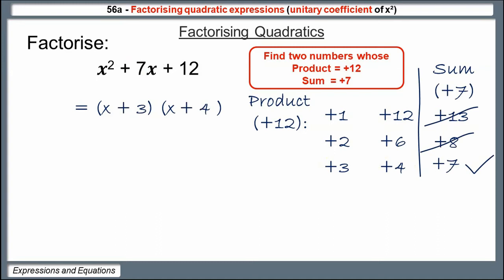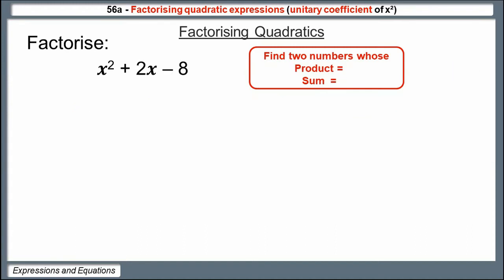When everything's positive it's straightforward, but when negative numbers start creeping in things get a little different — you need to pay very careful attention to your product values. So let's look at one with a minus: we're trying to factorize x-squared plus 2x minus 8. Same principles apply — a pair of brackets with x's in — and we need to find two numbers whose product is minus 8 and whose sum is plus 2.